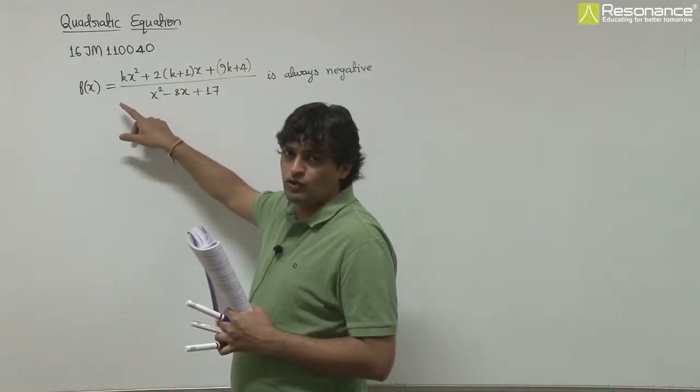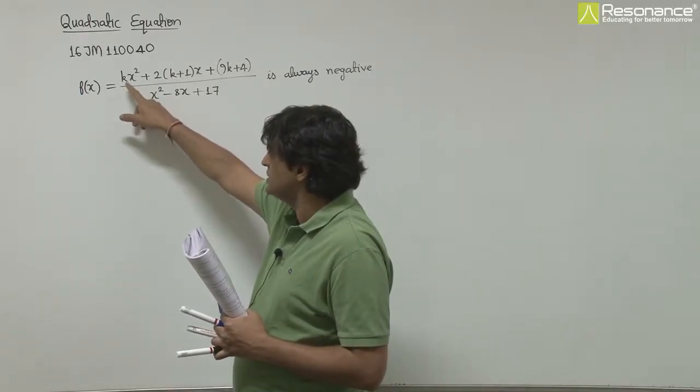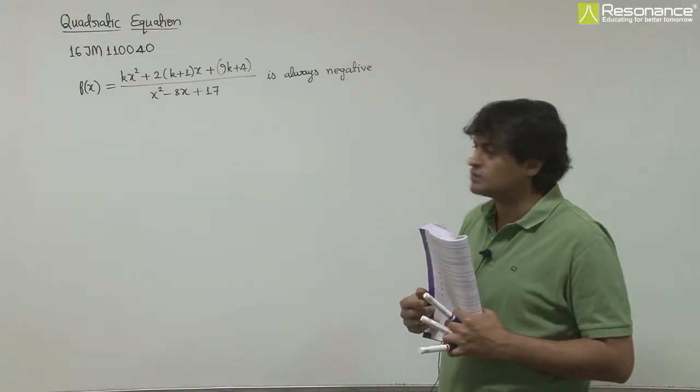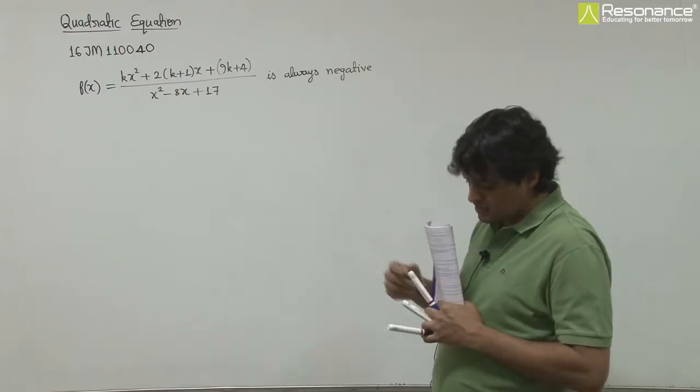In this question, we have to find the range of values of k for which this expression, kx² - 2(k+1)x + 9k + 4 divided by x² - 8x + 17, is always negative.